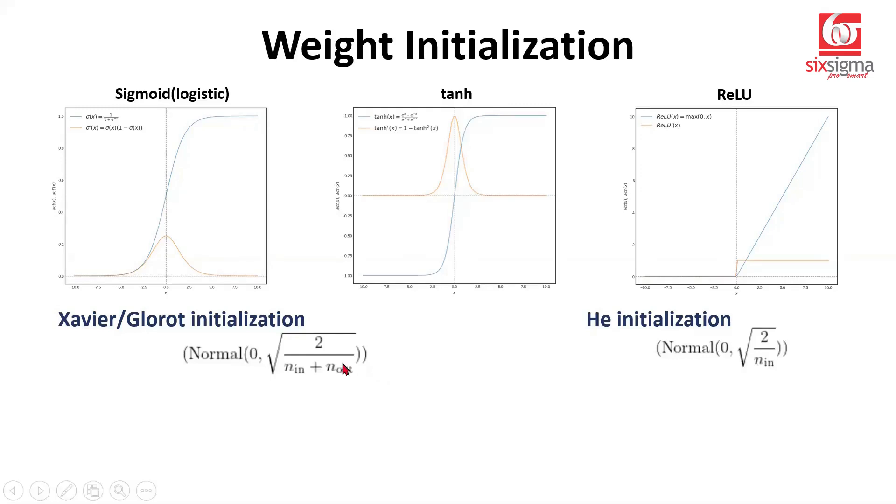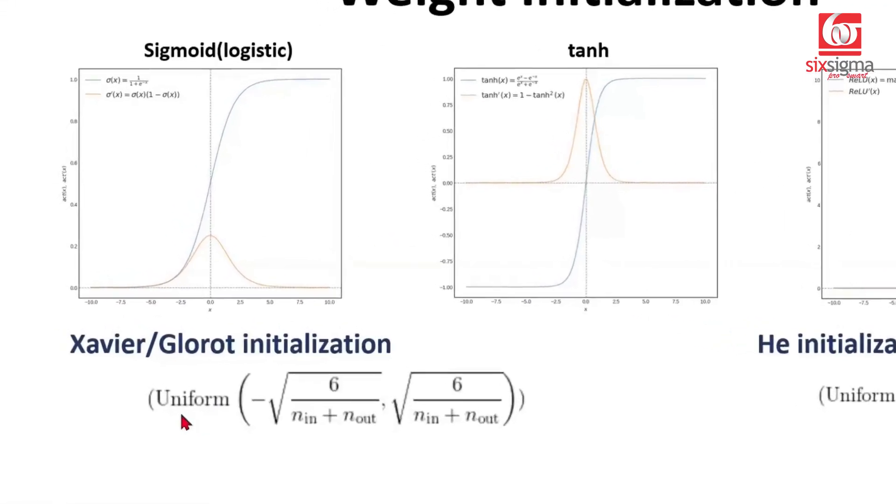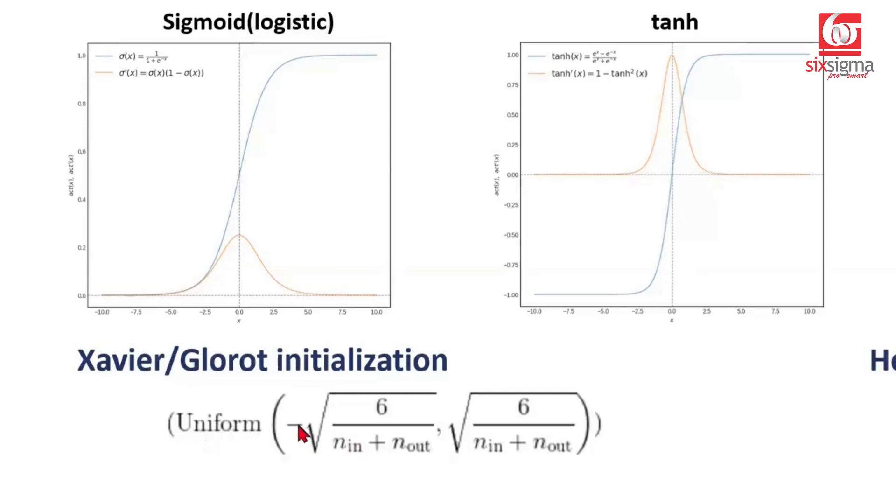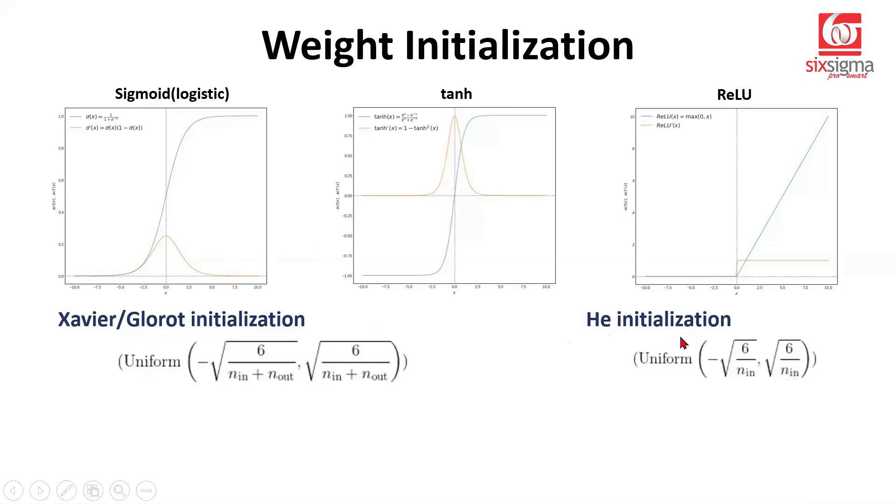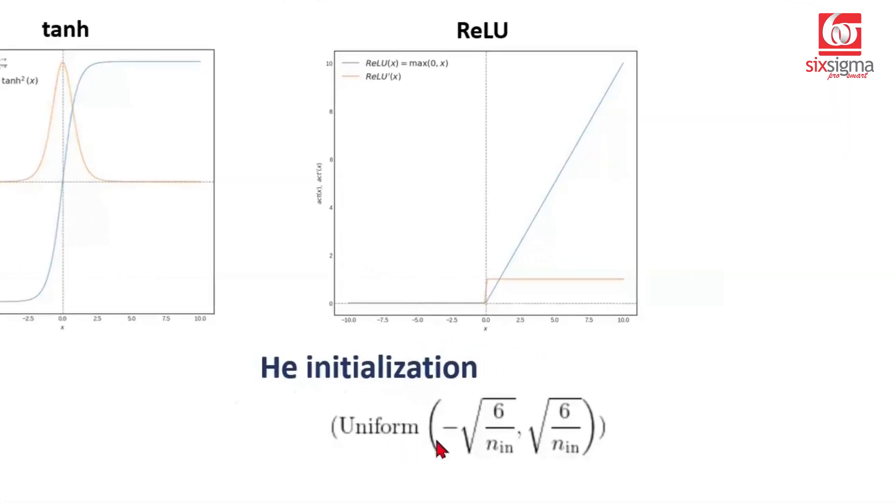Now it is observed that these suggestions work very well with deep neural networks when you have multiple hidden layers. But if you have relatively shallow neural networks, there are other variants of these initializations which are recommended. For a relatively shallow neural network, we can even follow a uniform distribution which ranges between negative of root six over number of inputs plus number of outputs to positive of the same quantity. So this works for tanh and sigmoid. And similarly for relu and its variants, this form of uniform distribution works pretty well. In fact, some of these are used as default in most of the packages.